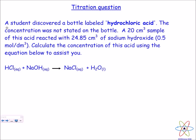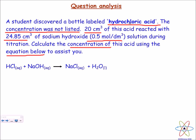Here's a titration question. A student discovered a bottle labelled hydrochloric acid, but the concentration was not stated. A 20 cm³ sample of this acid reacted with 24.85 cm³ of sodium hydroxide. We need to calculate the concentration of this acid. The concentration of the acid is unknown — that's what we're finding — and the NaOH has a concentration of 0.5 mol/dm³.